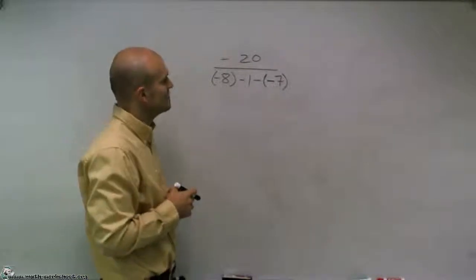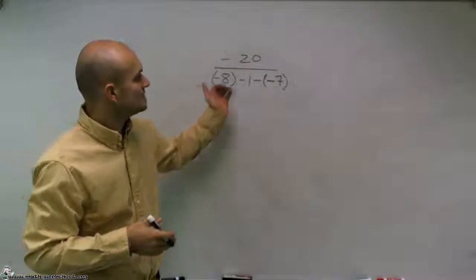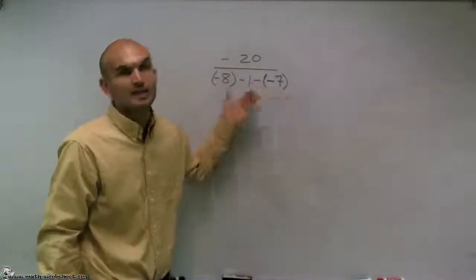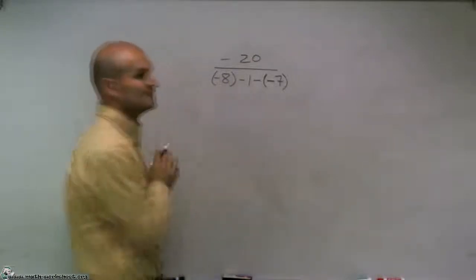So to do that, what I'm going to have to do is next move on to addition and subtraction. Well, addition and subtraction, we're just going to work from left to right. So what I have here is negative 8 minus 1, which is a negative 9.